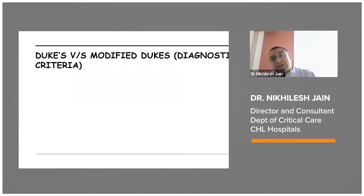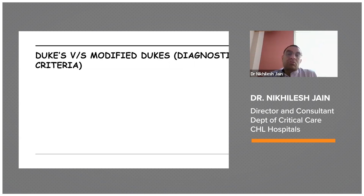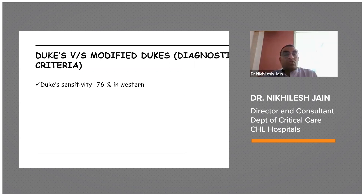Whenever we talk in terms of diagnosing an infective endocarditis patient, there is something called the Duke's criteria, the modified Duke's criteria, and certain modifications we need to understand. When we talk in terms of Duke's criteria, its sensitivity is approximately 76% in Western literature.